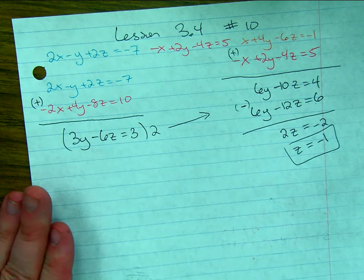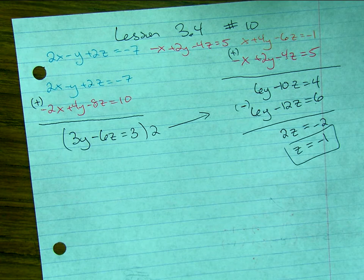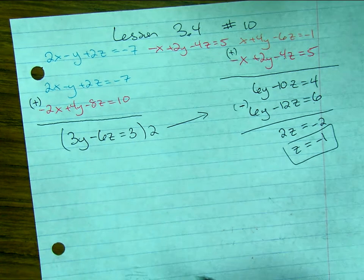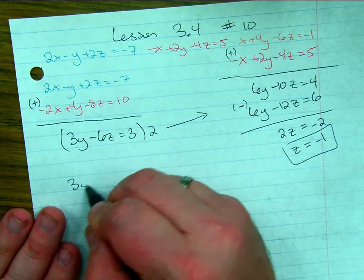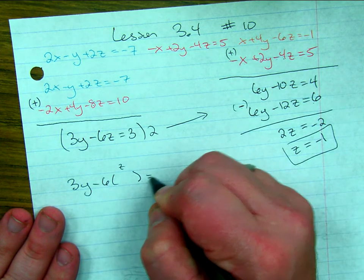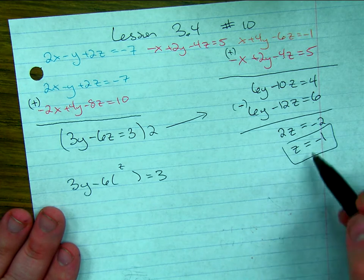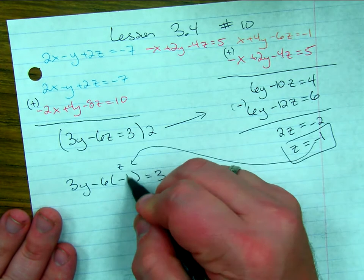One third of the way there. Technically way further than one third of the way there. At least time wise, but that's one third of the answer. I'm now going to go back into any equation that had two variables. It looks like this is the simplest one. The one that said 3y minus 6z equals 3. And I'm going to plug into that the value from z I just got, which was negative 1.